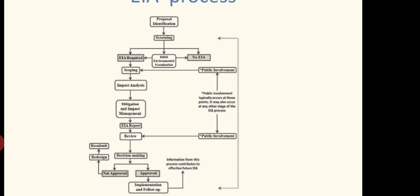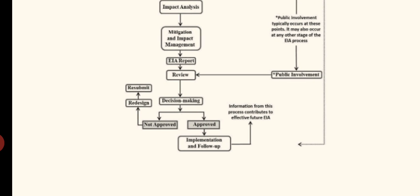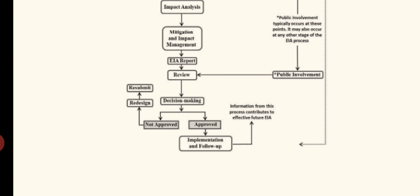Once the review is completed, the next step is decision making. Two decisions are possible: whether to approve or not to approve — made by the concerned authority. If everything is okay, the authority will approve, and the company moves to implementation and follow-up. If not approved, either the company can go for redesign or drop the project. If they drop it, the EIA process ends there. Otherwise, they will go for redesign and resubmit, and everything is followed from the starting stage again.